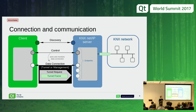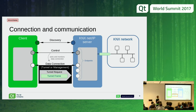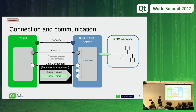Here we have the KNX network — the different devices linked to the KNX NetIP server — and here is the client, which is typically the kind of role taken by Qt KNX. We can be a client. The first thing we need to do is discover the KNX server. Once the server has been discovered, we establish an exchange with the control endpoint and ask it to prepare a data connection. This data connection can be of two types: it can be a tunnel, or it can be for management. It is within this data connection that we send frames — tunnel frames — which actually reach the KNX network.